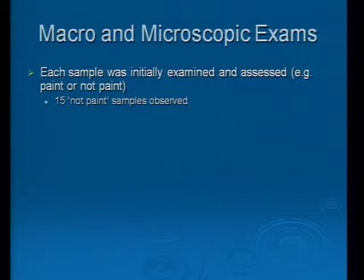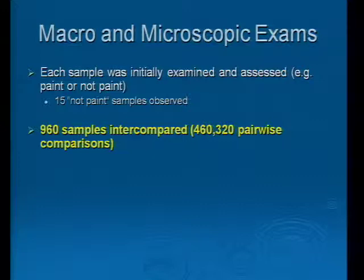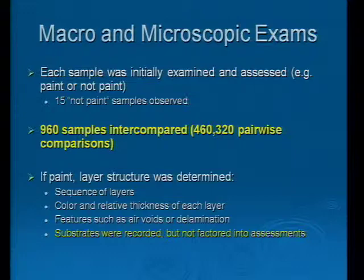The first step in the examination process of each individual sample was, of course, to determine was it even paint. Fifteen samples turned out to not even be paint, so they were eliminated from the study. That left 960 samples to be intercompared — over 460,000 pairwise comparisons that needed to be performed. If the sample was paint, we then assessed the layer structure: the sequence of the layers, the color and relative thicknesses, features such as air voids, whether the paints were delaminating at certain interfaces. We did record what the substrate was, but we didn't factor it into comparative assessments.